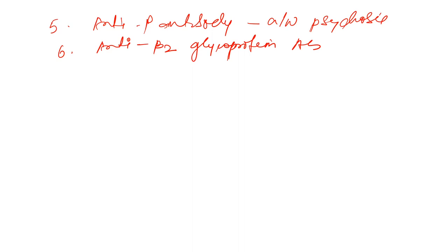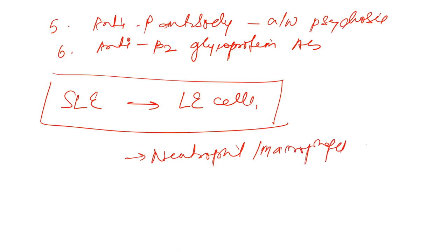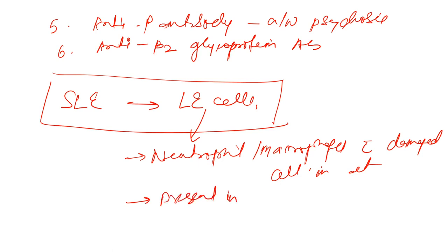One important cell found in SLE is the LE cell. It is a neutrophil or macrophage with a damaged cell inside it. The LE cell is basically a neutrophil and is present in vitro. The treatment for SLE is steroids, since it is an autoimmune disorder.